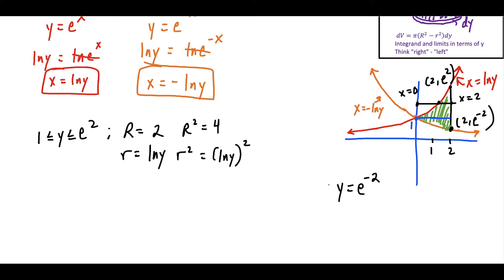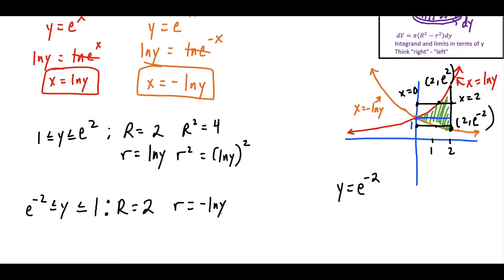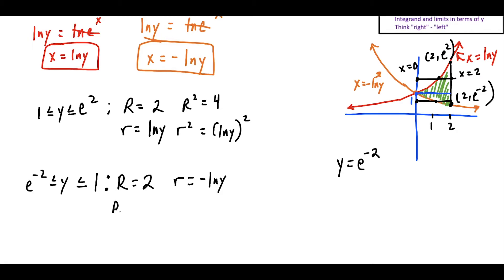For the bottom portion, y ranges from e to the negative two up to one. The big radius is still two, so R squared still equals four, because the distance between x equals zero and x equals two is always constant. The small radius for this interval is the distance from the y-axis to the orange curve x equals negative natural log y, giving r equals negative natural log y. When squared, the negative becomes positive, so r squared equals (natural log y) squared.